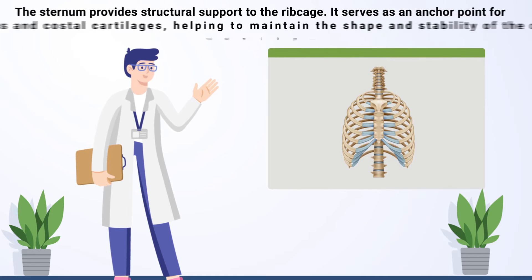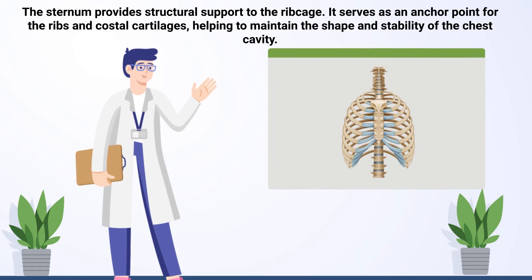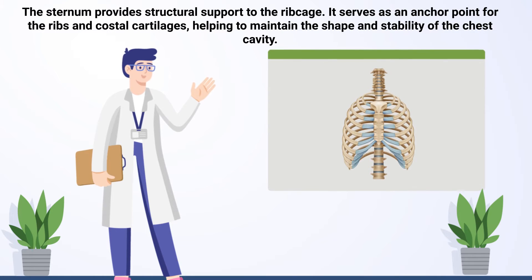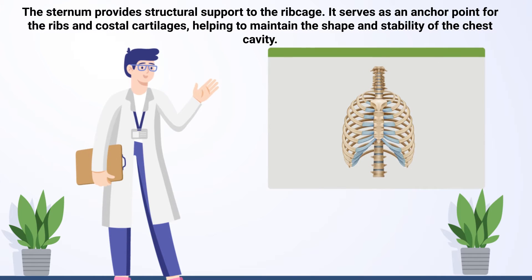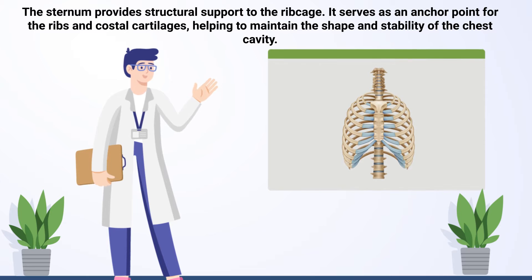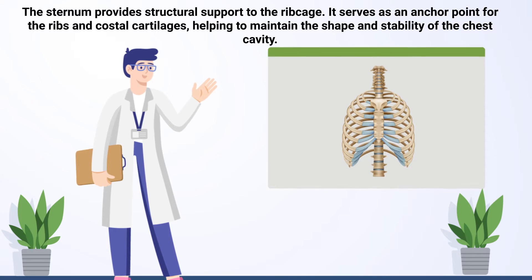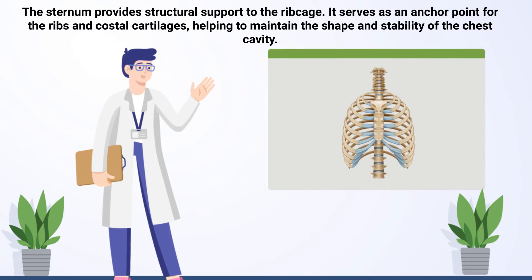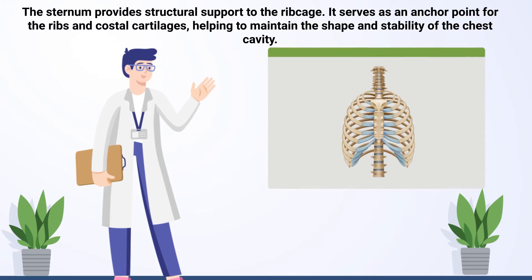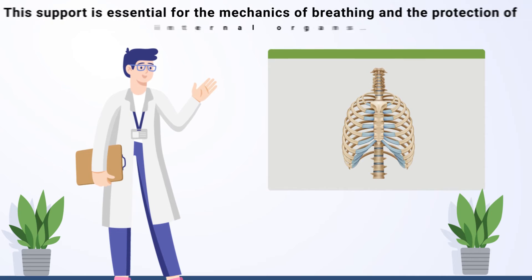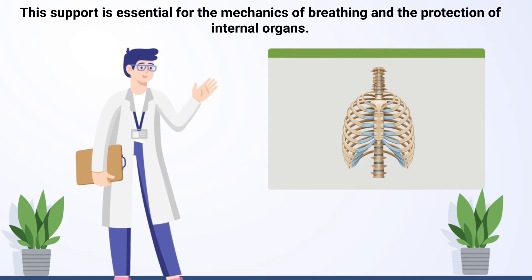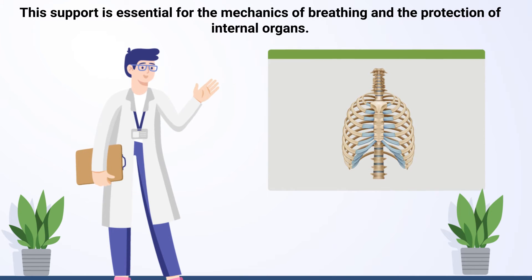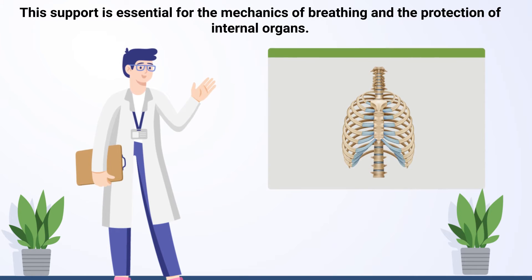The sternum provides structural support to the ribcage. It serves as an anchor point for the ribs and costal cartilages, helping to maintain the shape and stability of the chest cavity. This support is essential for the mechanics of breathing and the protection of internal organs.